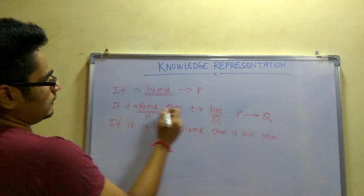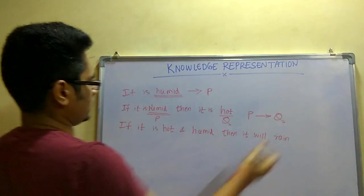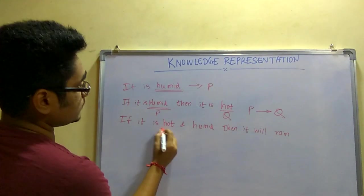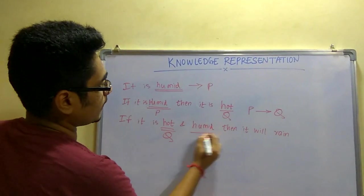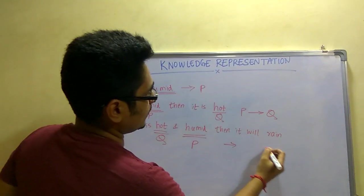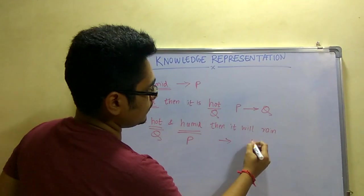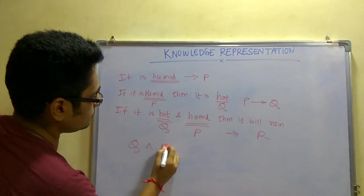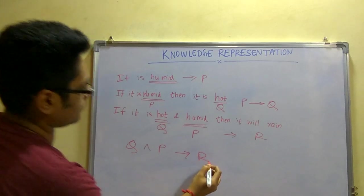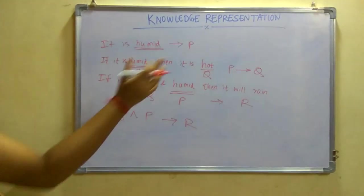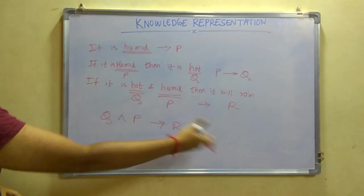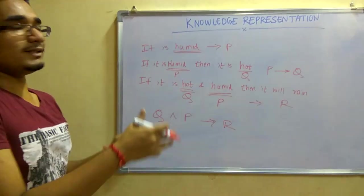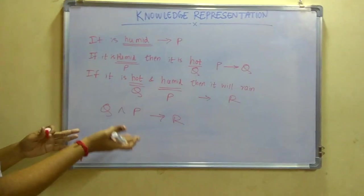The arrow represents 'then,' so P → Q means if it is humid then it is hot. Next, if it is hot as well as humid then it will rain. For rain we assign R. So this becomes Q ∧ P → R, meaning it should be both hot and humid for it to rain. This is what propositional logic looks like.